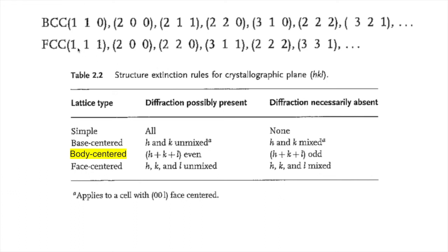For FCC, the first expected peak is (111) — all odd, so unmixed. Then (200) — all even. Then (220), (311) — all odd. Then (222) — all even. Zero is considered even. These extinction rules tell us which planes are allowed and which are absent, and that is the power of structure factor calculations.